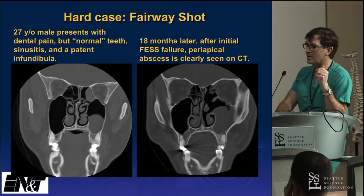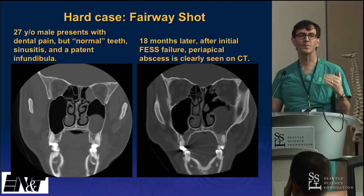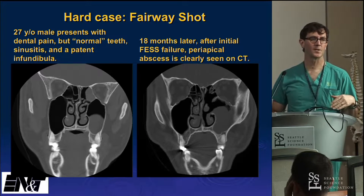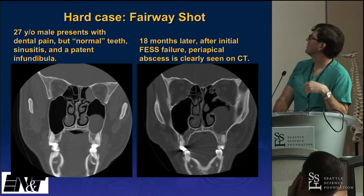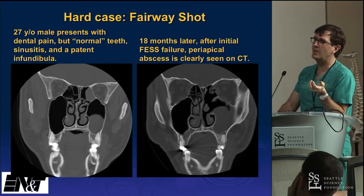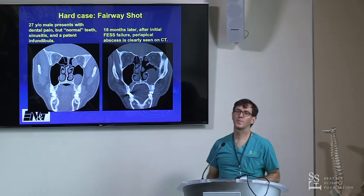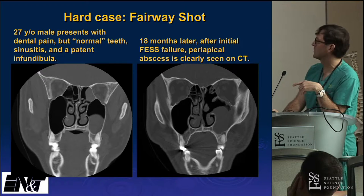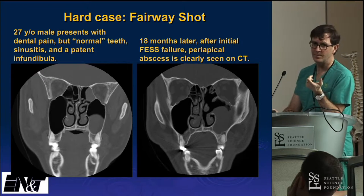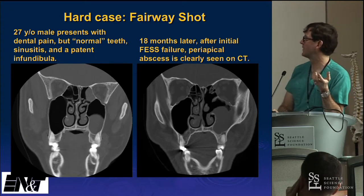The second case is a fairway shot — a young guy with a large symptomatic mucus retention cyst and an open infundibula. My partner did a mini-FESS and opened the cyst. A year later, symptoms returned. On a second CT, we clearly saw a periapical abscess that had been missed the first time. One of the key clues: when you see symptomatic maxillary sinus disease with an open infundibula, think tooth.